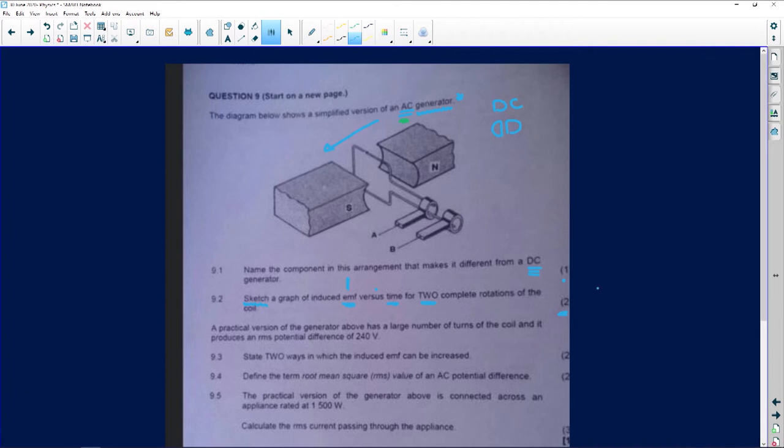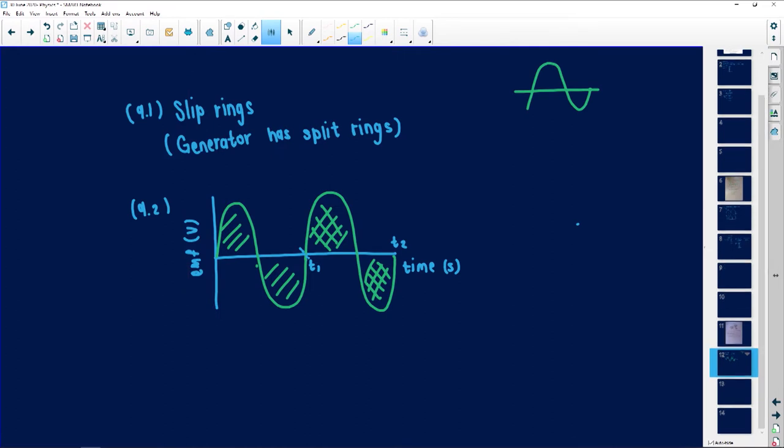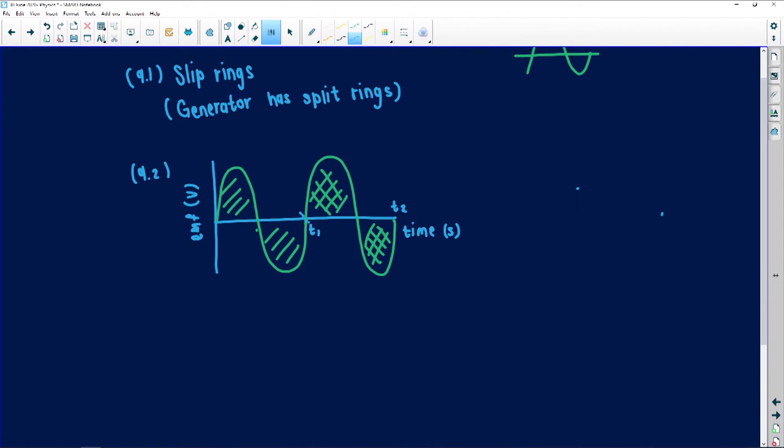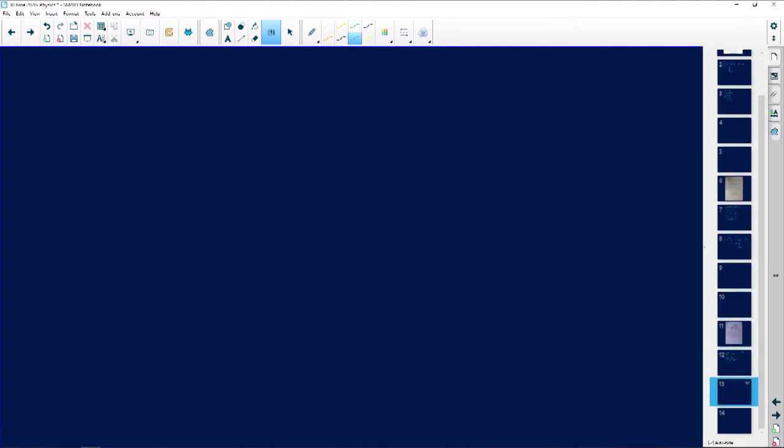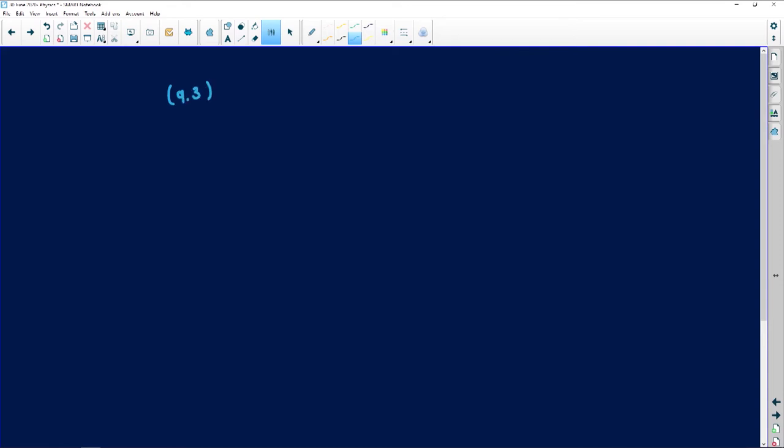So the next question says, a practical version of the generator above has a large number of turns of the coil and it produces an RMS potential difference of 240. So now 9.3, we must state two ways in which the induced EMF can be increased. This is also another question that they love, but it's also very simple. Think of it in your everyday life. If you're at a party but you're not really hearing the music properly, what do you do? You turn up the volume. So it's the same thing that we need to do in generators. We can actually have a greater current by doing certain things. Unfortunately, you must know this off by heart.